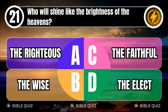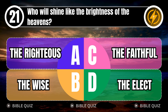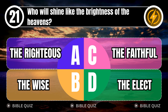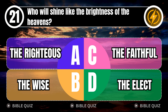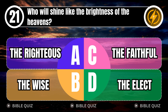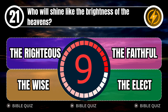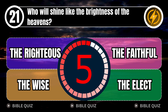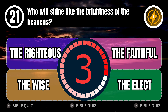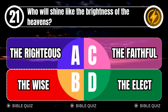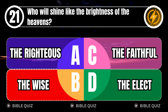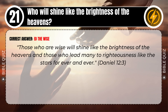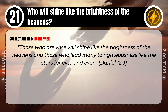Question 21: Who will shine like the brightness of the heavens? A. The righteous. B. The wise. C. The faithful. D. The elect. Correct answer: B. The wise. Explaining the Bible — those who are wise will shine like the brightness of the heavens, and those who lead many to righteousness, like the stars, forever and ever. Daniel 12 verse 3.